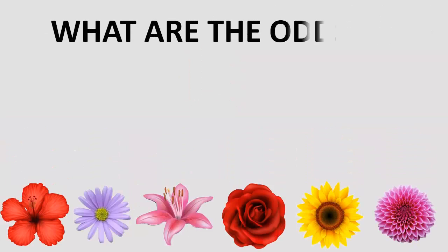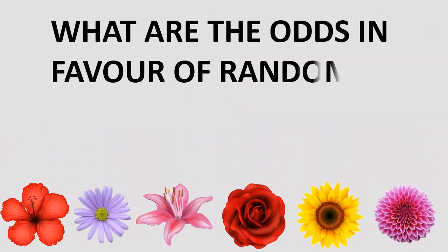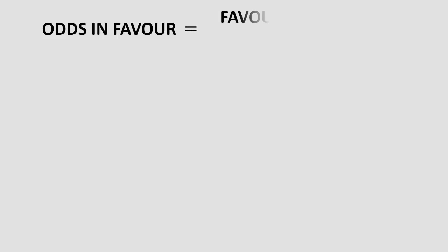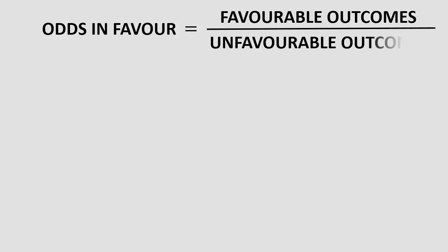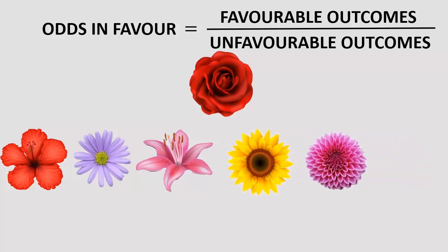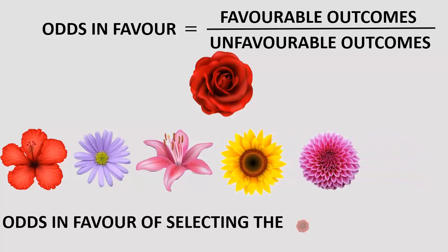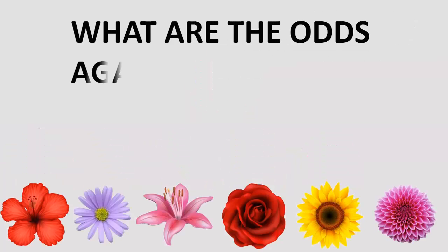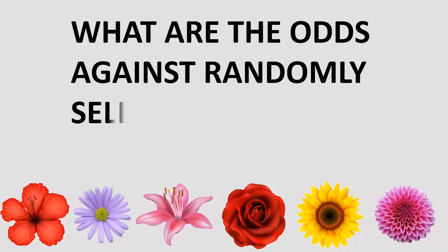What are the odds in favor of randomly selecting the rose flower? The odds in favor is the ratio of the favorable outcomes to the unfavorable outcomes. Odds in favor of selecting the rose is 1 is to 5, that is 1 by 5.